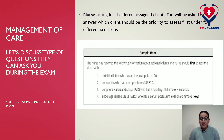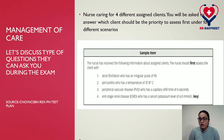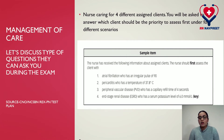Now let's discuss the type of questions they can ask during the exam under this category. For example, the nurse has received the following information about assigned clients. The nurse should first assess the client with: atrial fibrillation who has an irregular pulse; pericarditis who has a temperature of 37.8°C; peripheral vascular disease who has a capillary refill time of four seconds; or end-stage renal disease who has a serum potassium of 6 mmol/L. The correct answer is end-stage renal disease. You can expect priority-based and delegation questions from this category.